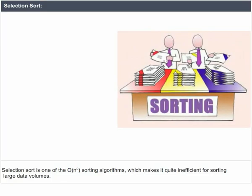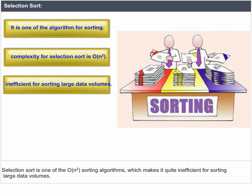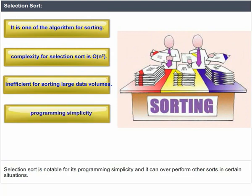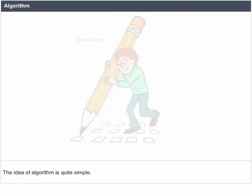Selection Sort is one of the O(n²) sorting algorithms, which makes it quite inefficient for sorting large data volumes. Selection Sort is notable for its programming simplicity and it can outperform other sorts in certain situations.